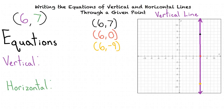What do each of these points share in common? Well, they all have an x-value of 6. Exactly! We can see that all the points on this vertical line have the x-value of 6 since they are all 6 units to the right of the y-axis. So it makes sense for this line to have the equation x equals 6.